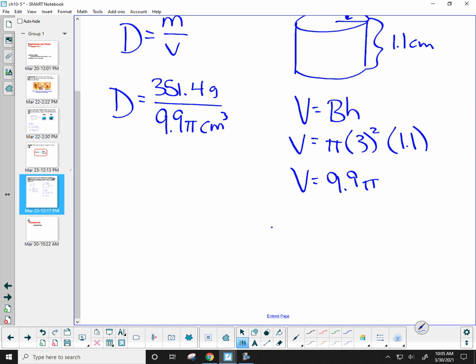That's not what we really want. We want 351.4 divided by 9.9 pi.